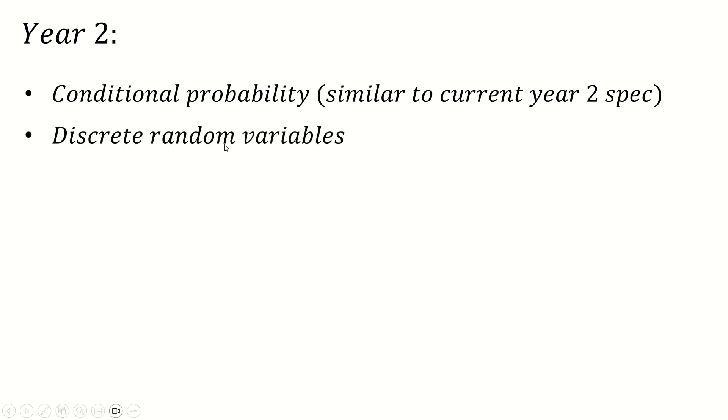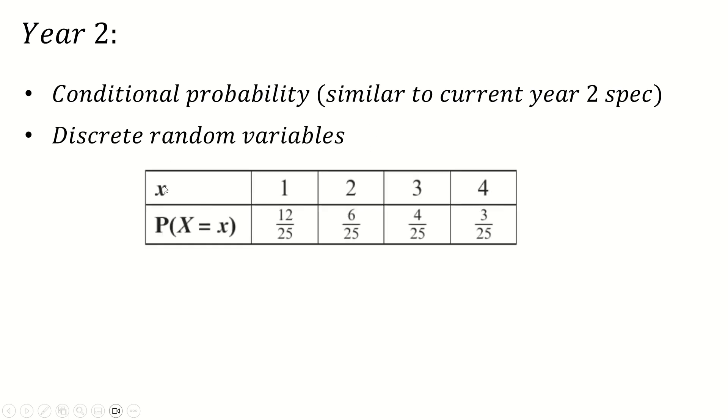Next we'll do discrete random variables. This is something taken from further stats. You look at things like this, where something can take a set of specific values with certain probabilities and you can work out the expected value of this. If you do it and you can work out the variance of it and so on. It's not going to be a very long topic. You can also like do transformations on it and stuff like that, but it's still not going to be very long topic because what this is really in here for is to support us with our last topic in year two, which is the big one.